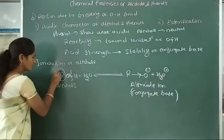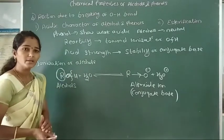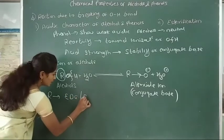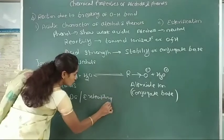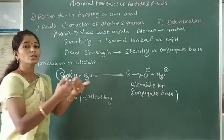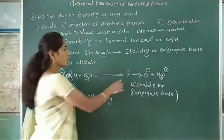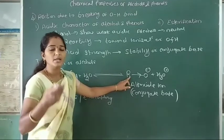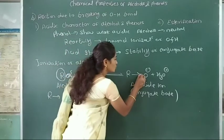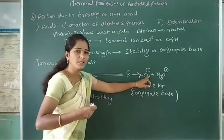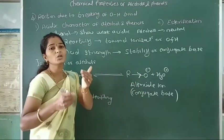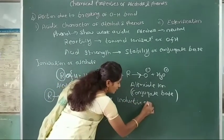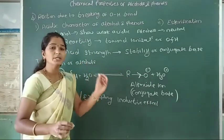In alcohol, this oxygen is attached to an alkyl group. We know that alkyl group is an electron-donating group, also called an electron-releasing group. In the case of the alkoxide ion, the alkyl group donates its electrons to the oxygen atom. Therefore, the electron-donating inductive effect of this alkyl group destabilizes the conjugate base, or destabilizes the alkoxide ion.